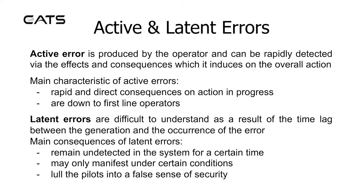Active and latent errors. An active error is produced by the operator and can be rapidly detected via the effects and consequences which it induces on the overall action. The main characteristics of active errors are rapid and direct consequences on the action in progress, and they are down to first-line operators.